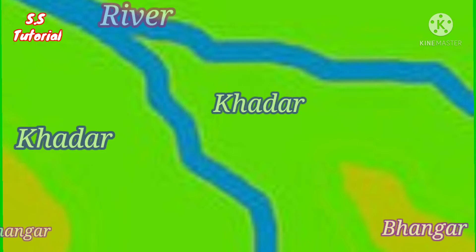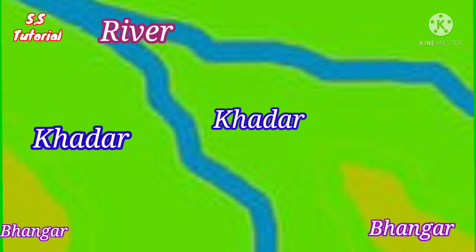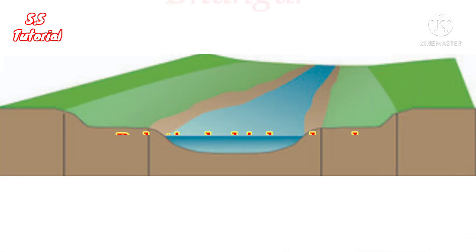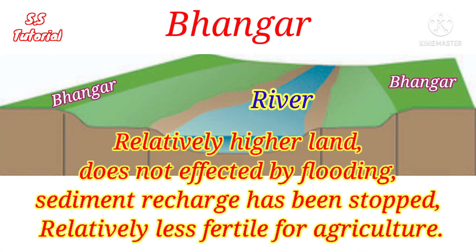Flood plains are divided into two parts. One of them is called Vangar and the other is called Khadar. Vangar is a slightly higher, old flood plain where river flood water cannot reach and it is almost impossible to deposit new sediment. Due to the lack of new sediment, Vangar is less fertile for agriculture.